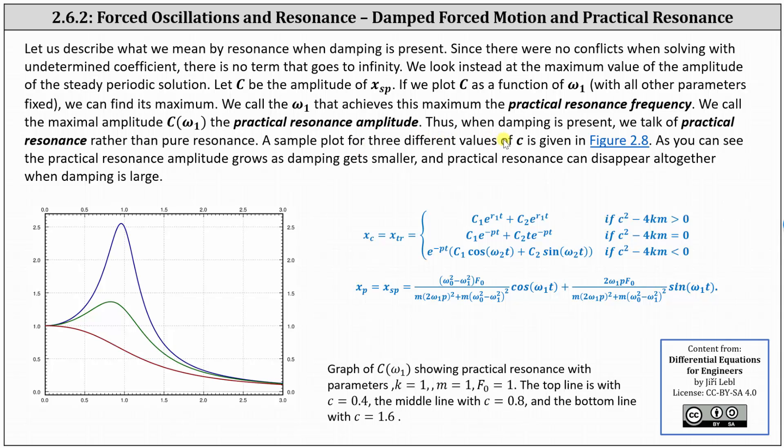A sample plot for three different values of c is given in Figure 2.8 below. As you can see, the practical resonance amplitude grows as damping gets smaller, and practical resonance can disappear altogether when damping is large, as we see from the bottom graph.